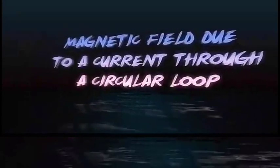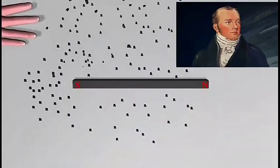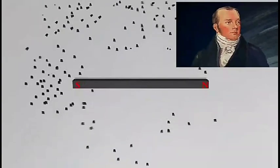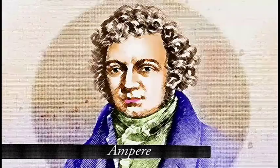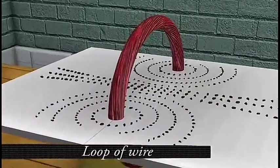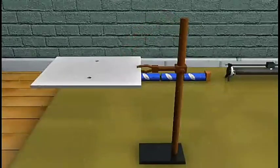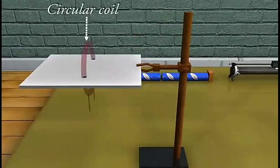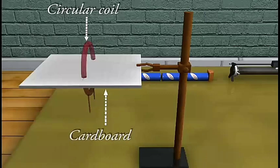Magnetic field due to a current through a circular loop. After Orsted's discovery of magnetic effect of current carrying wire, Ampere found that a loop of wire also had a magnetic field. In order to find the magnetic field due to a current carrying circular coil,